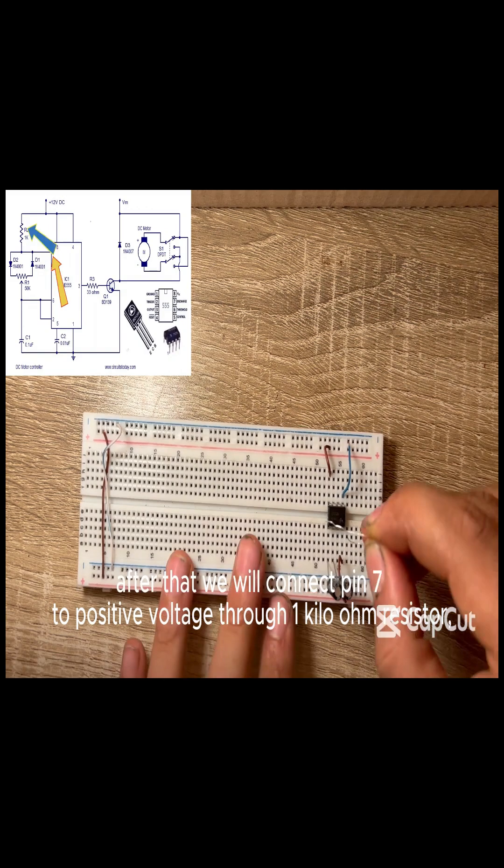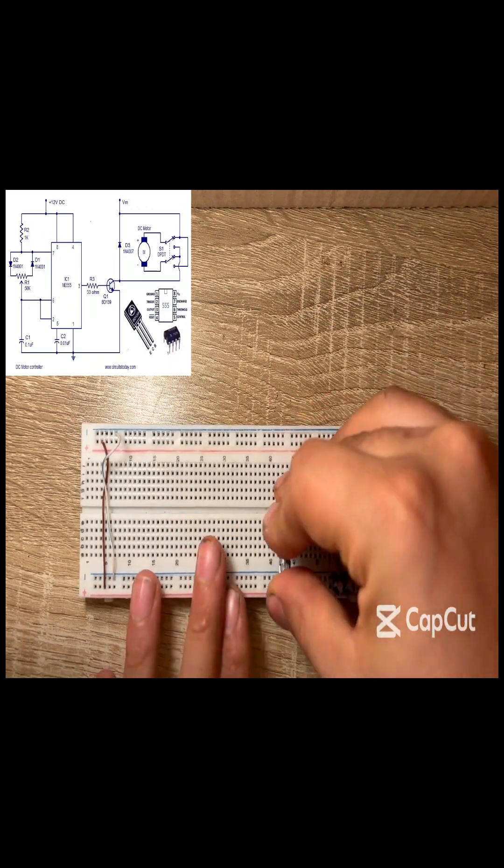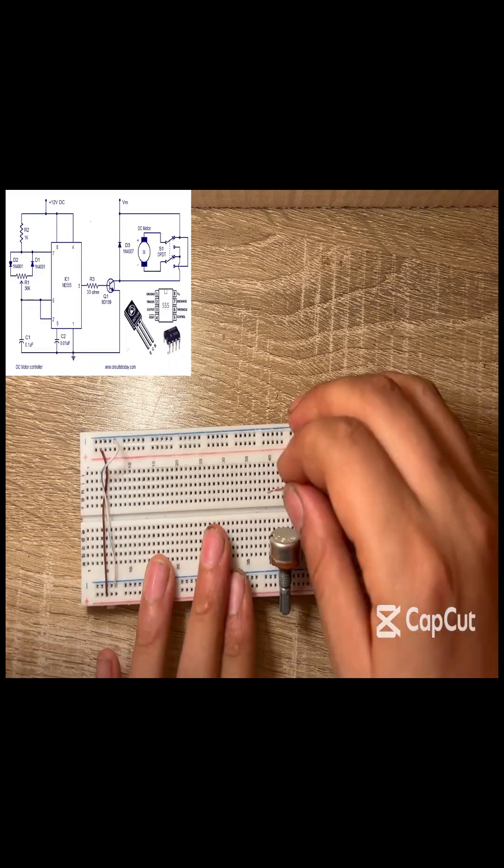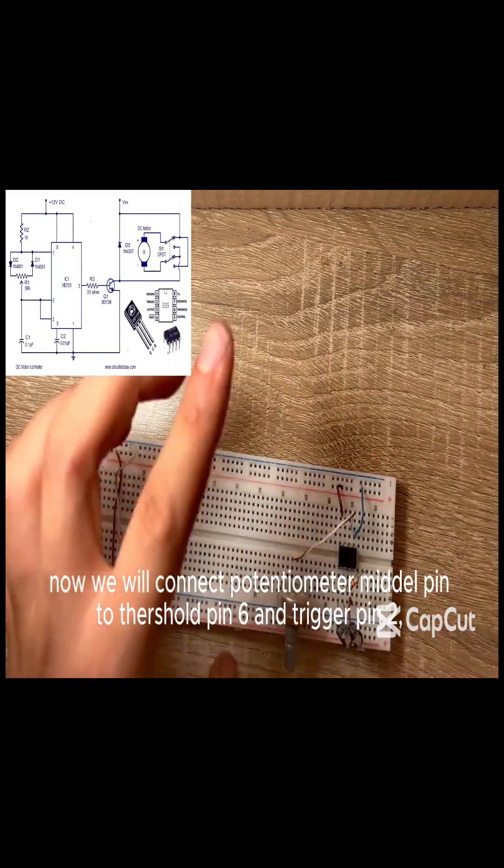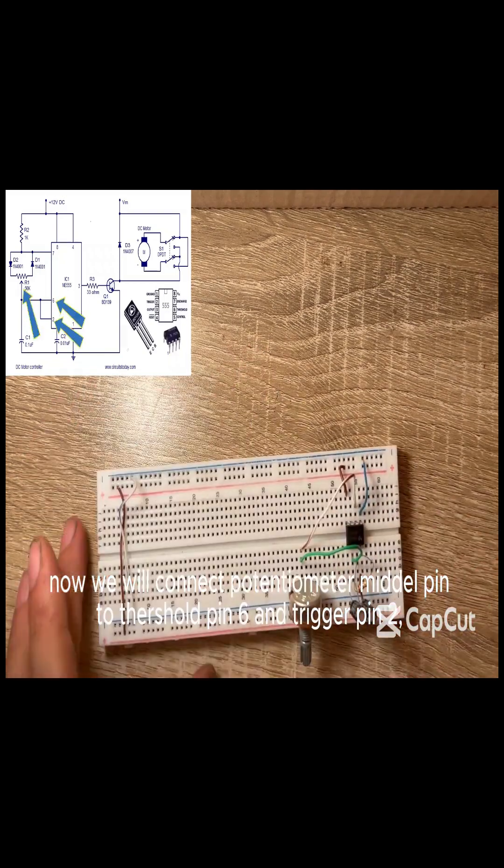After that, we will connect pin 7 to positive voltage through 1 kilo ohm resistor. Now we will connect potentiometer middle pin to threshold pin 6 and trigger pin 2.